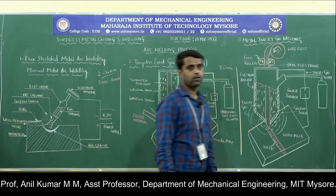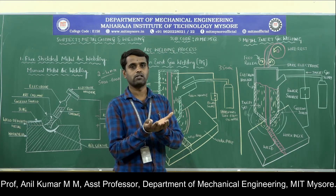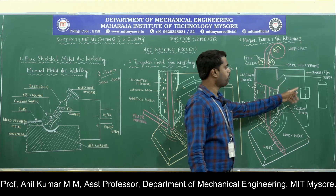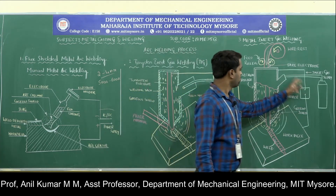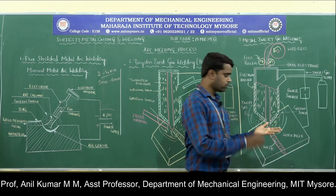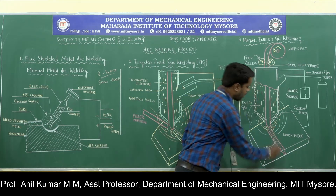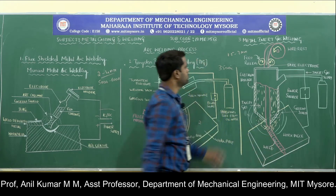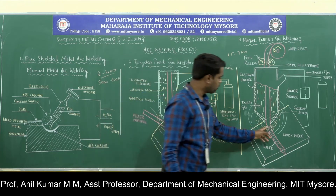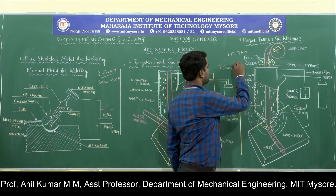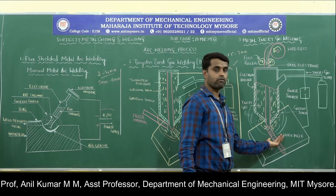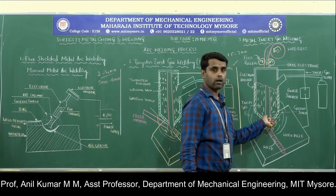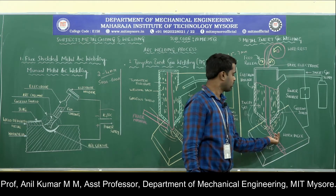In MIG welding, initially take the two metal pieces and clean them — remove dust particles, grease, oil, whatever is present — and position them with a suitable gap. Switch on the power source and pressure regulator so that current flows through the electrode and workpiece. Touch the electrode to the workpiece and separate it by a small gap of around 1.5 to 3 mm. The electric arc is struck at that gap, with a temperature of at least around 3500 degrees centigrade. Due to the high temperature, the edges of the two metal pieces melt. Since a consumable electrode is used, the electrode also melts, combines with the molten workpiece material, and upon solidifying, a strong solid joint is formed.